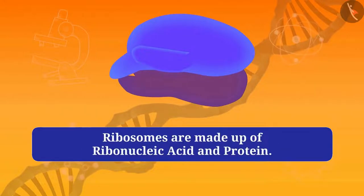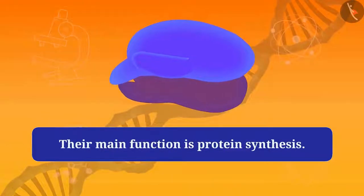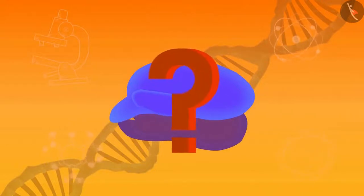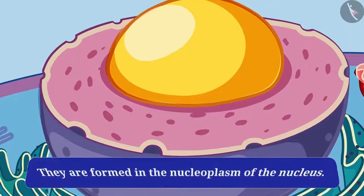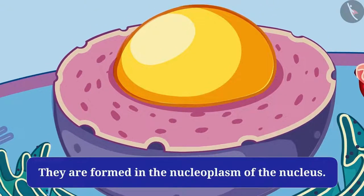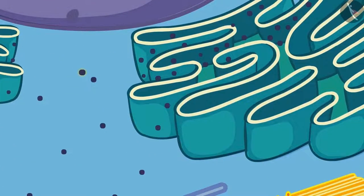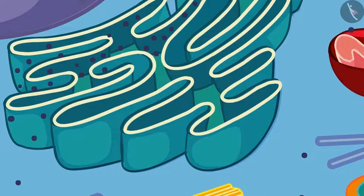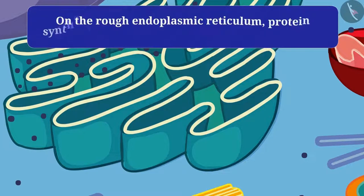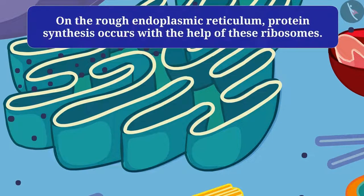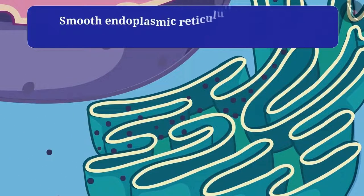Ribosomes are made up of ribonucleic acid and protein, and their main function is protein synthesis. They are formed in the nucleoplasm of the nucleus, and after getting formed they come out through nuclear pores and stick to the endoplasmic reticulum, which is then called rough endoplasmic reticulum.